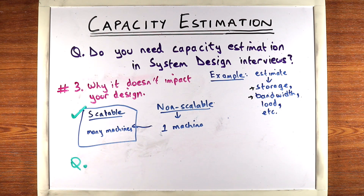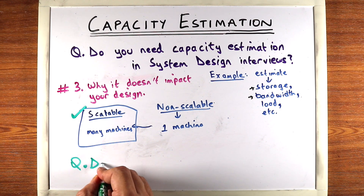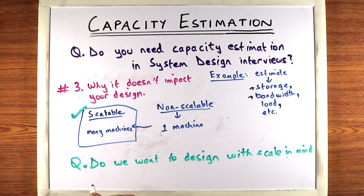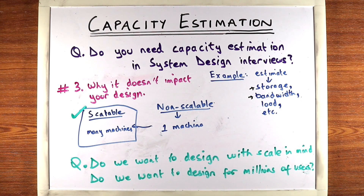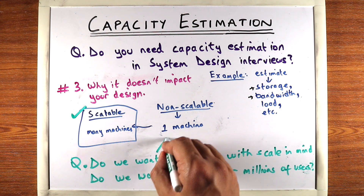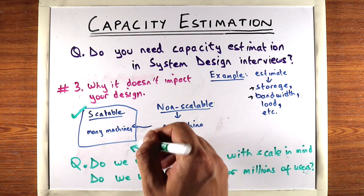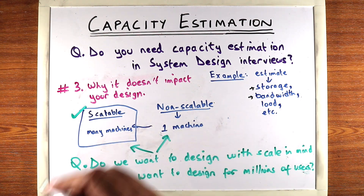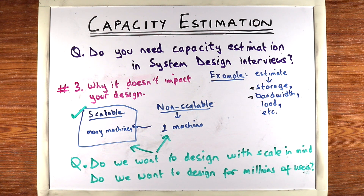The question we recommend candidates ask the interviewer is: do we want to design with scale in mind? Another way of phrasing it is, do we want to design for millions of users? This is enough to tell you whether you should start with the scalable or non-scalable system. Keep in mind that system design interviews are very subjective, so a lot of this will depend on the interviewer and what they expect. You should always ask the interviewer questions about what they expect. Usually, the interviewer will lead you in the right direction if you're doing something wrong.